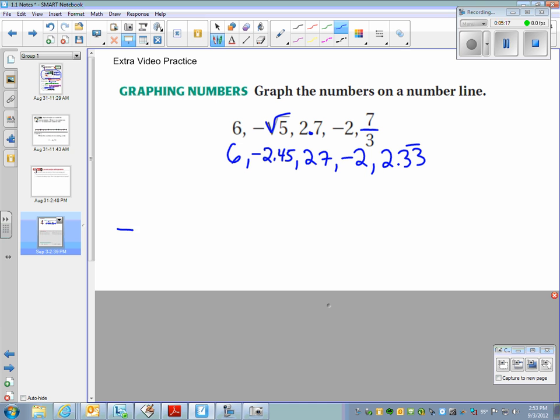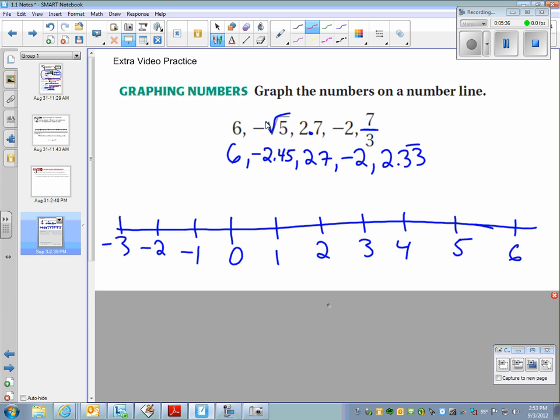Now that they all look the same, it's really easy to draw a number line. So we just draw a number line with 0, negative 1. Negatives go to the left. Positives go to the right. We try and space them out the same if we can. Sometimes you kind of run out of room, but you do the best you can so that they're evenly spaced out. Now we just graph our numbers. 6 is right here. Negative 2.45, we go negative 2 and 2.45 is about halfway in between negative 2 and negative 3. 2.7 is a little bit past half of 2. Negative 2 is right on the little dash mark. And 2.33 is about a third of the way between 2 and 3. So that's our answer.